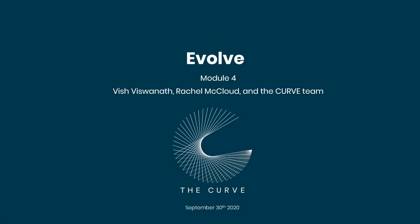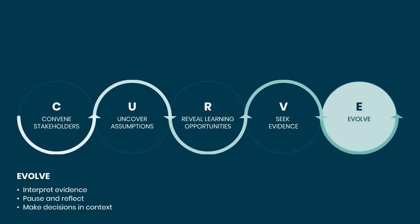Hi, this is Dr. Rachel McLeod and welcome to our fourth and final module of our CURVE Training for Responsive Feedback, Evolve. Within this final module, we focus on putting it all together. We want to take the evidence that we've gathered through our previous steps and interpret it, analyze the findings to find meaning and what it might mean for our program and the adjustments that we need.